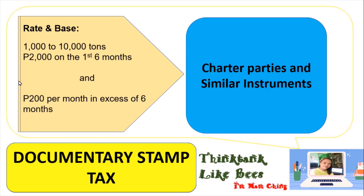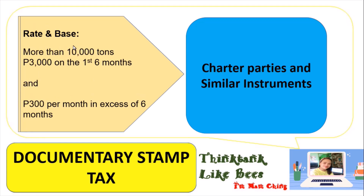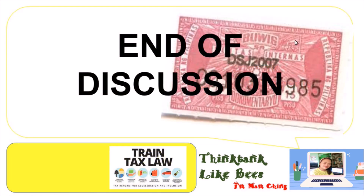If the vessel is 1,000 tons to 10,000 tons, you pay 2,000 pesos for the first 6 months, and 200 pesos per month for the remaining months. If the vessel is more than 10,000 tons, you pay 3,000 pesos for the first 6 months, and 300 pesos per month in excess of 6 months. This concludes our discussion on Documentary Stamp Tax. Thank you and God bless — I hope you understood our lesson for today.